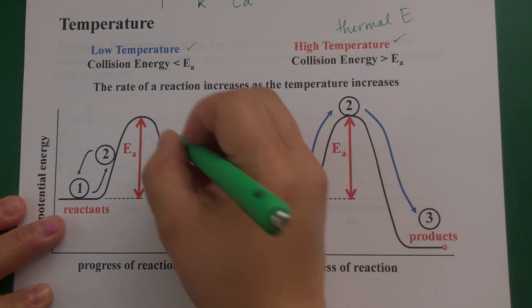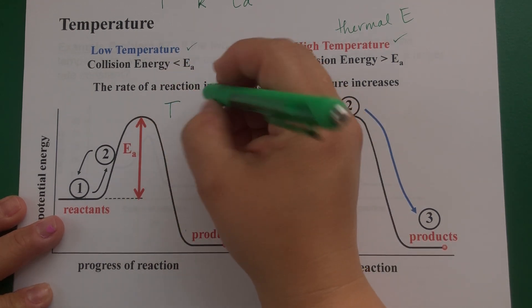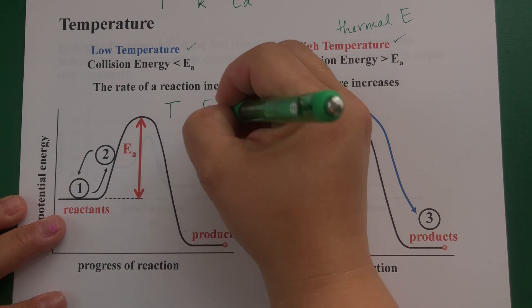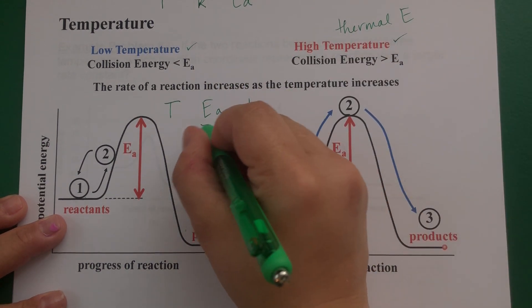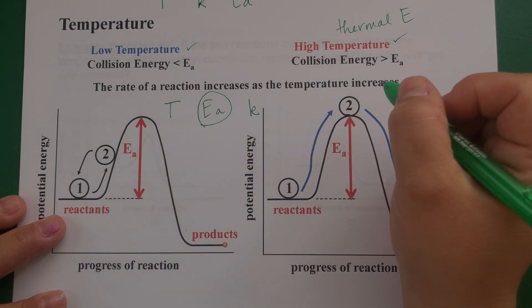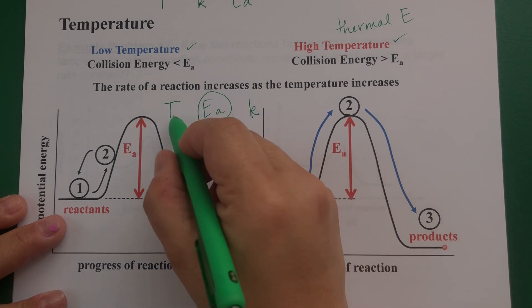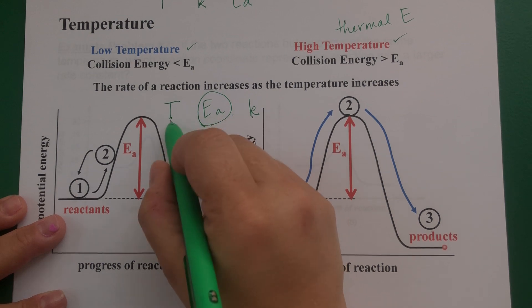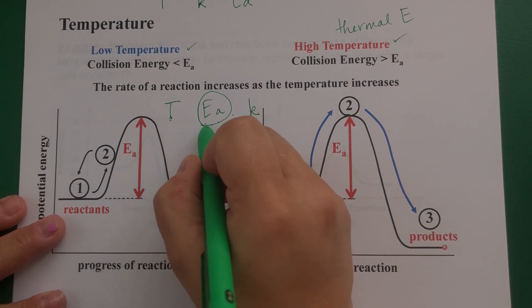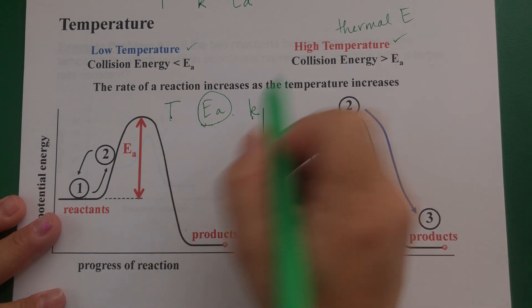We have a relationship between temperature, activation energy, and rate constant. Based on the activation energy, you can tell if a reaction is going to be faster or slower. Also, if you increase the temperature, you increase the energy those molecules have, meaning they meet the activation energy requirement faster and therefore the reaction is faster.